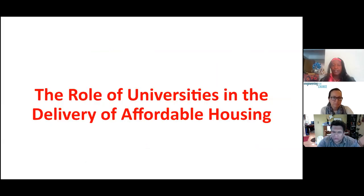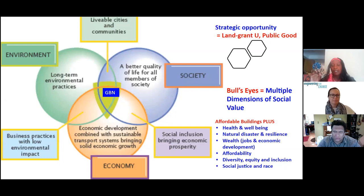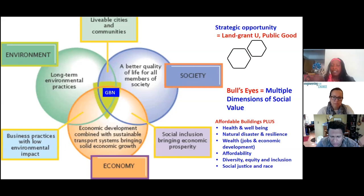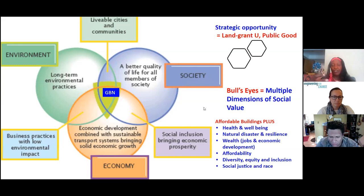If we are going to deal with the cross-cutting themes listed in the Grand Engineering Challenges, we have to think about the multiple benefits of being sustainable. We can do buildings plus health, buildings plus resilience to natural and man-made disasters, buildings plus wealth creation, buildings plus affordability, buildings plus diversity, equity and inclusion, buildings plus social justice, buildings plus race. As long as we find ways of partnering with institutions, individuals, and communities that allow us to embrace the social, we have a high probability of addressing those cross-cutting issues.